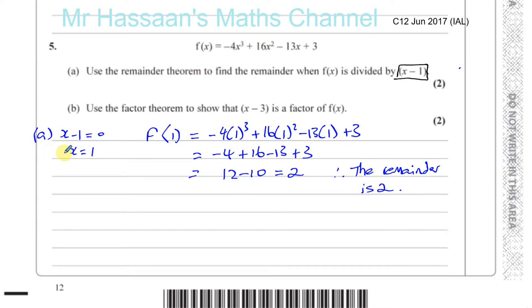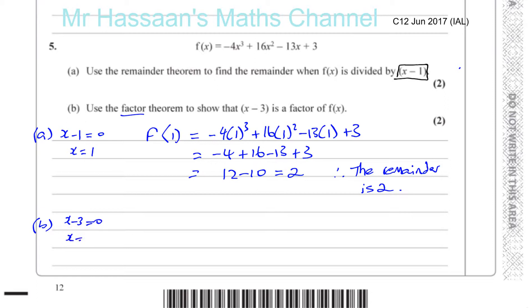Then it says: use the factor theorem to show that x minus 3 is a factor of f(x). This is a very similar type of question. It just so happens when something is a factor of f of x, then whatever number that makes that bracket 0, when you substitute it into the function, will make the value of the function 0. So we know that x minus 3 equals 0 means x must be equal to 3. So we're going to substitute x equals 3 into the original function.